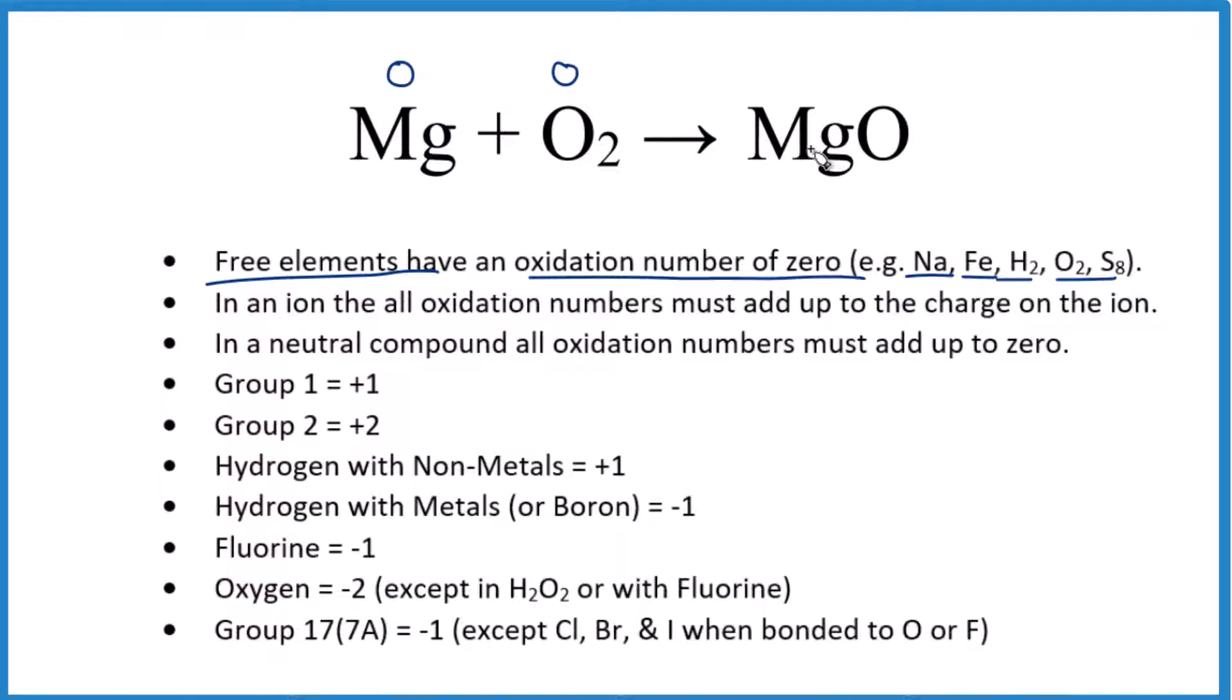Over here we have MgO, magnesium oxide. So the oxygen, oxygen is almost always negative two with these exceptions here. So this is negative two. Magnesium, that's in group two, that's plus two.